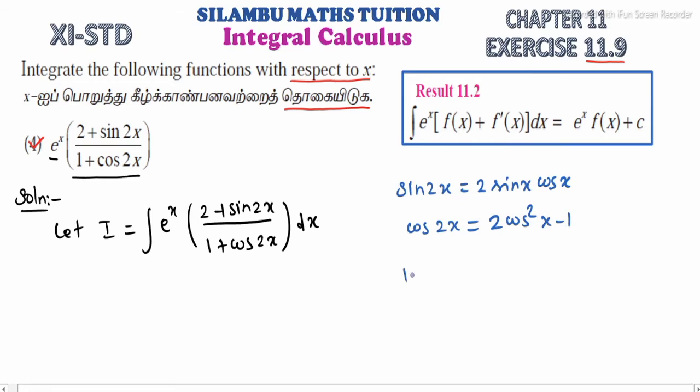In the form we need, 1 + cos 2x equals 2 cos² x. Now we apply the sin 2x and cos 2x properties to the numerator and denominator.